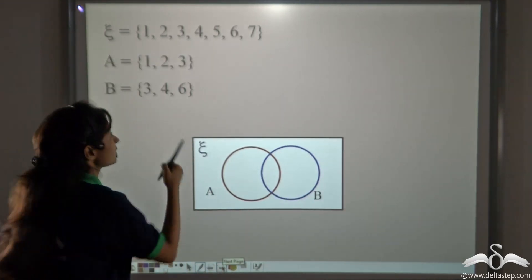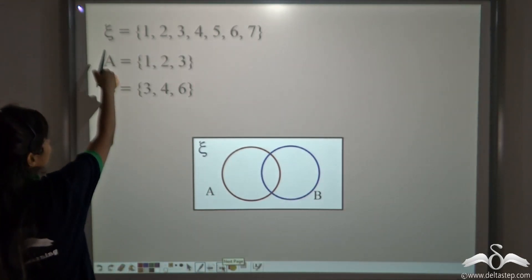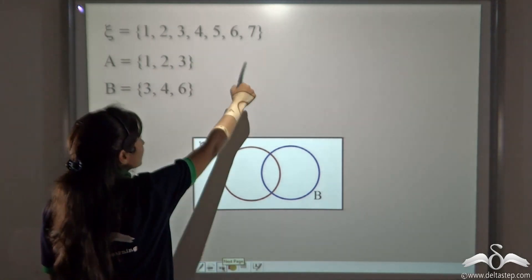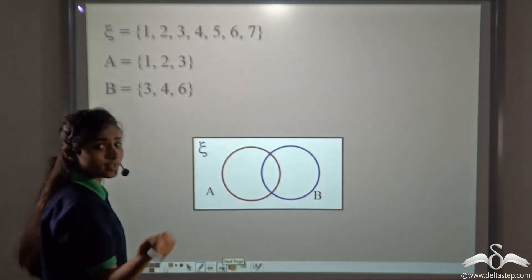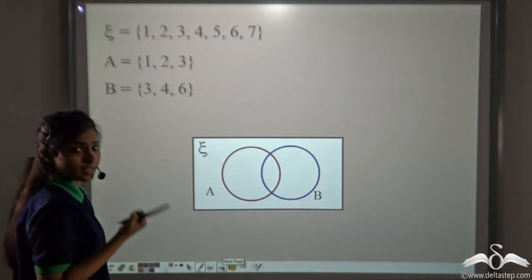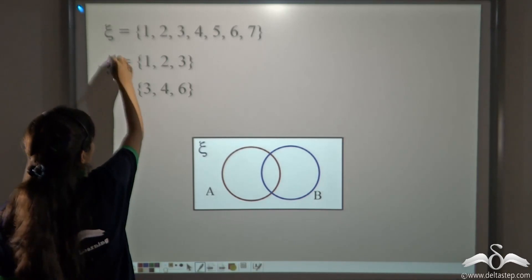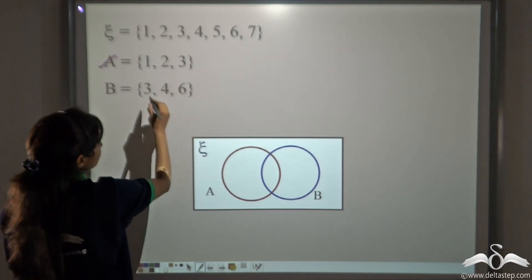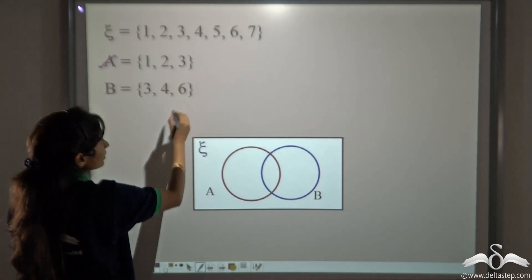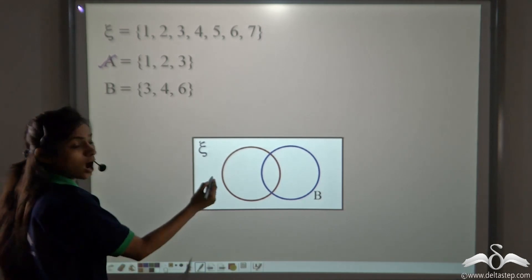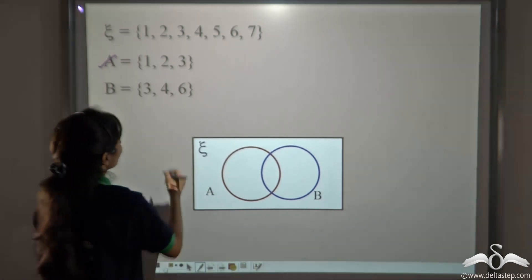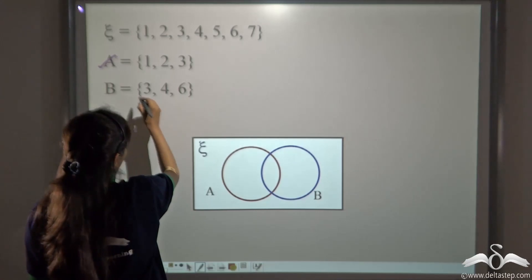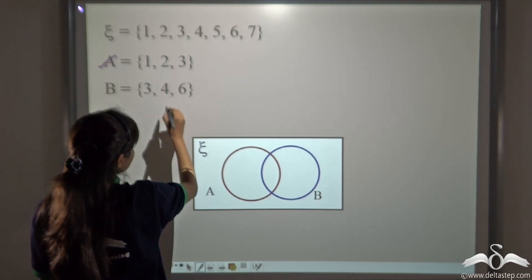Now let's take this example. Your universal set is {1, 2, 3, 4, 5, 6, 7}, that is natural numbers less than 8. Set A is {1, 2, 3} whereas set B is {3, 4, 6}. How will you make the Venn diagram? A is {1, 2, 3} and B is {3, 4, 6}.